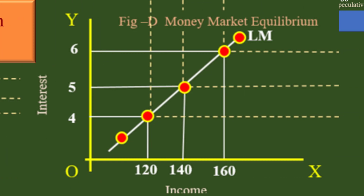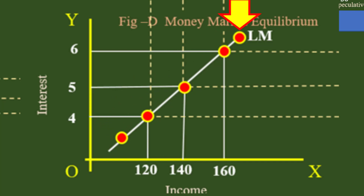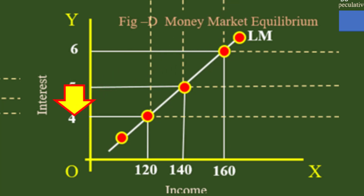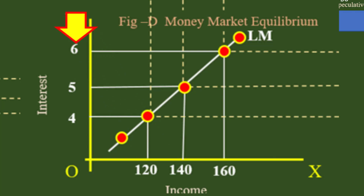The LM curve also relates interest with income, but it slopes upward, showing a positive relation between interest and income. When interest is low at 4%, income level is Rs. 120. When interest goes high to 6%, income is also high at Rs. 160.